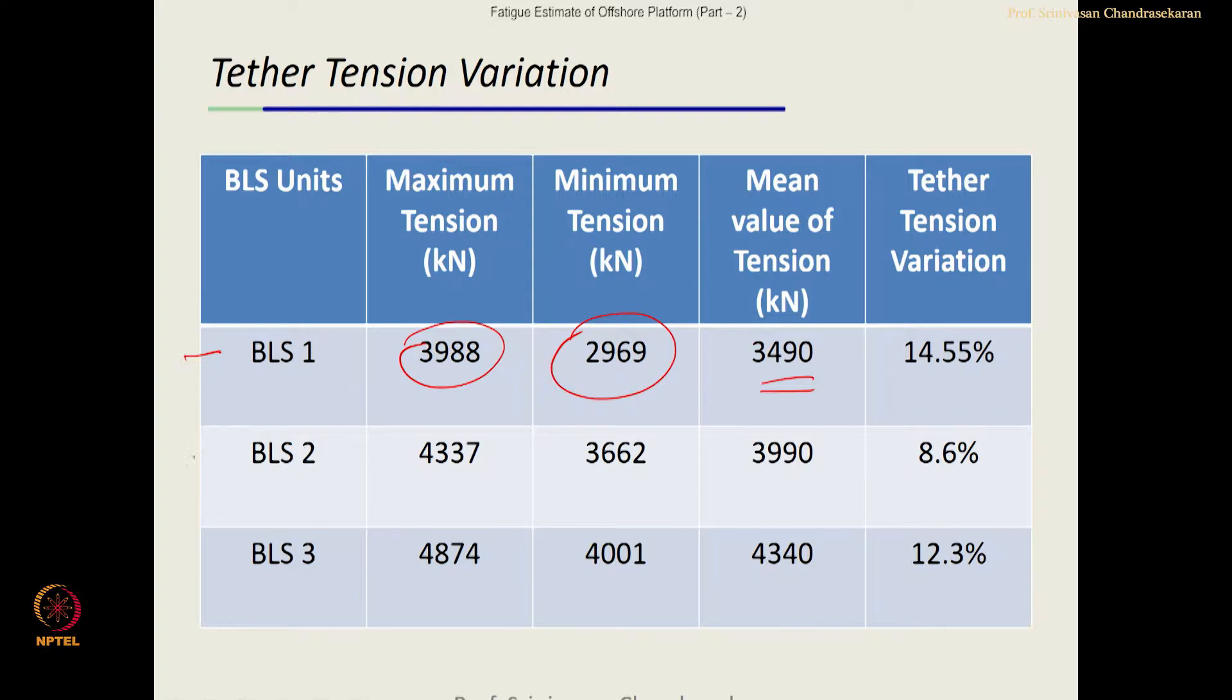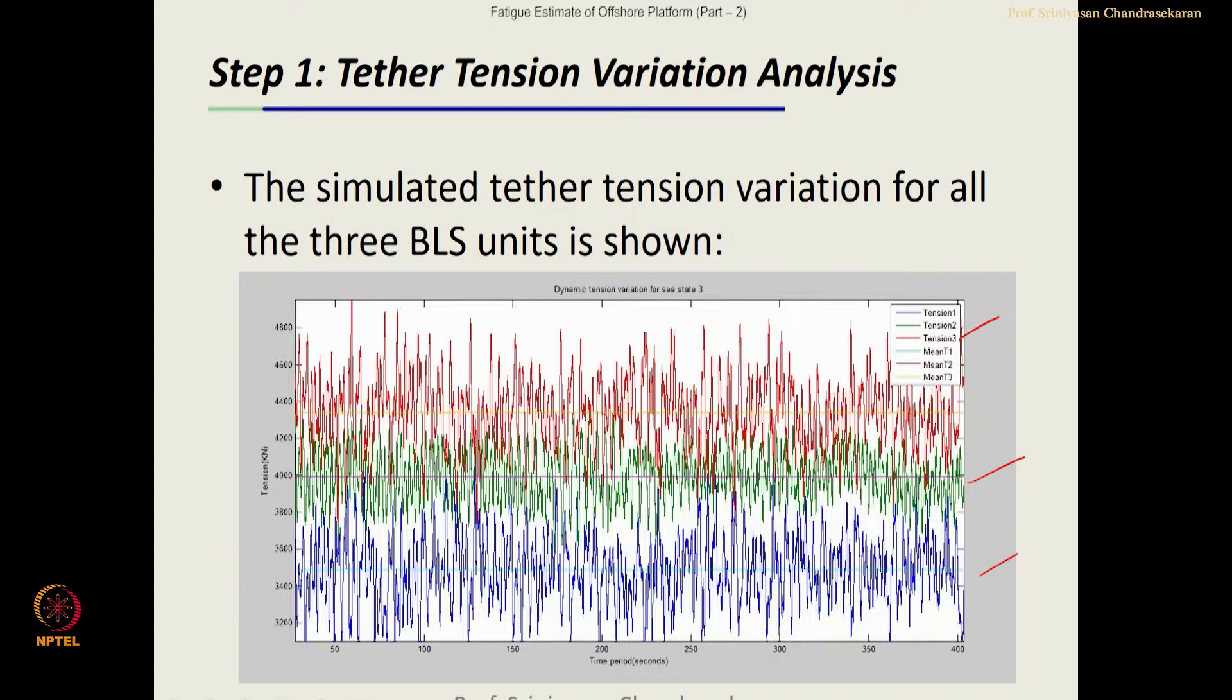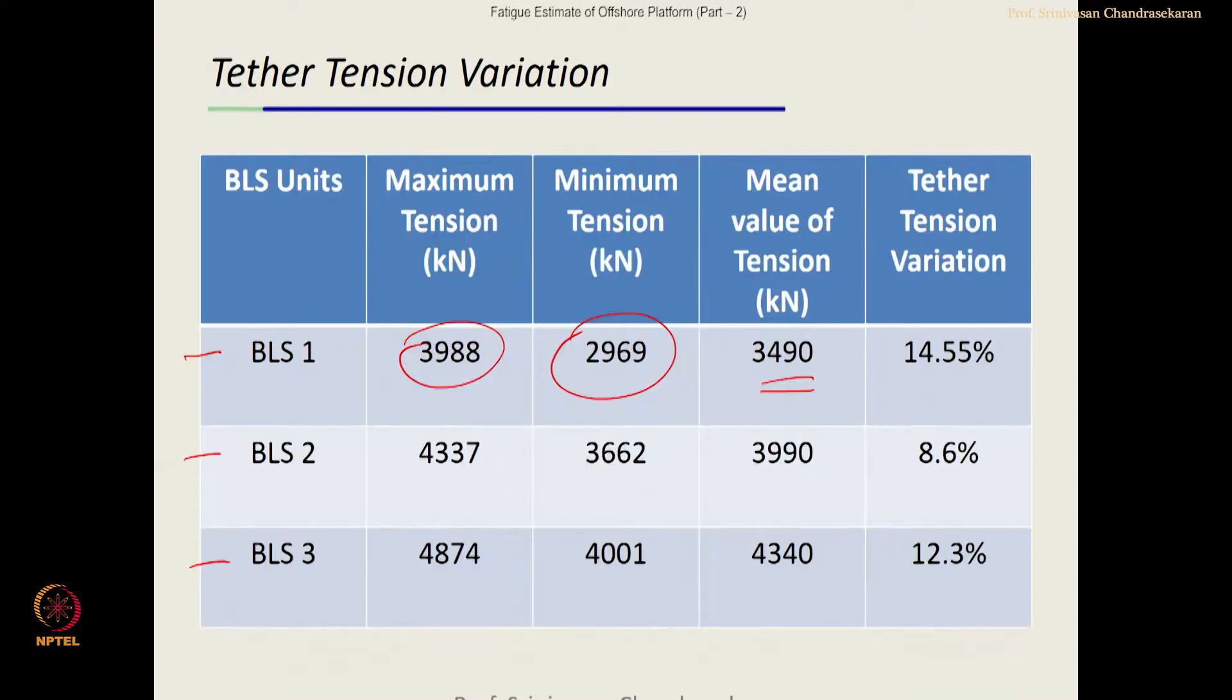In the buoyant leg 1, 2 and 3 which are plotted with different colors as you see in this indication here has a different mean value and comparing this mean value with the initial pretension T 0 initial value, we have also estimated the percentage variation.